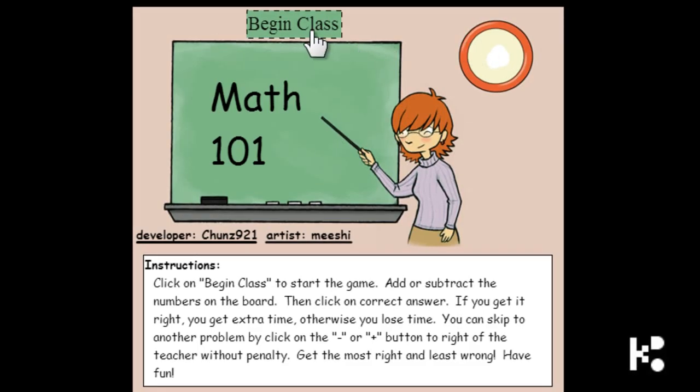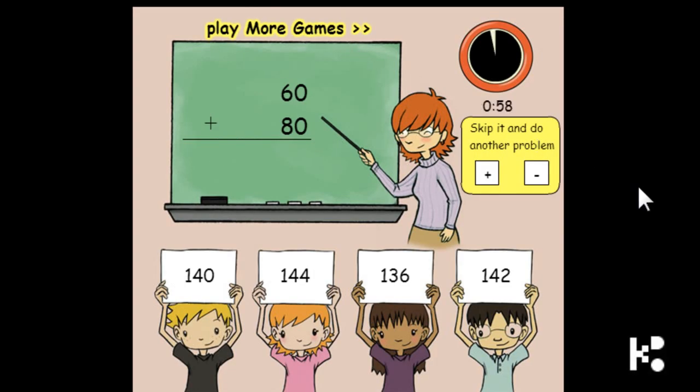Okay, let's start. Begin class. Okay, 60 plus 80 is 140. 6 minus 4 is 2, and 1 minus 6 is negative 5. And 1, 1, 2.